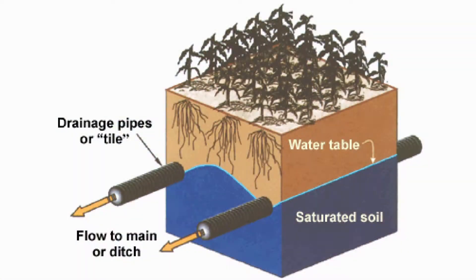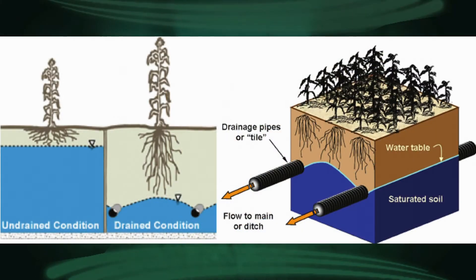There are two different ways it's been used in Vermont: either just in a low spot or a wet spot, or it's been systematically put throughout the field. This picture here shows you how the water table itself, the blue, is lowered where the tile is located. You'll see there's an area where the water table isn't always lowered, so it sort of has that elevation change throughout the field. In the photo on the left, under undrained conditions, the roots are really shallow and the plant doesn't do as well, whereas in the drained condition the roots can grow much deeper. The plant can take up a lot more nutrients and grow a better crop for the farm.